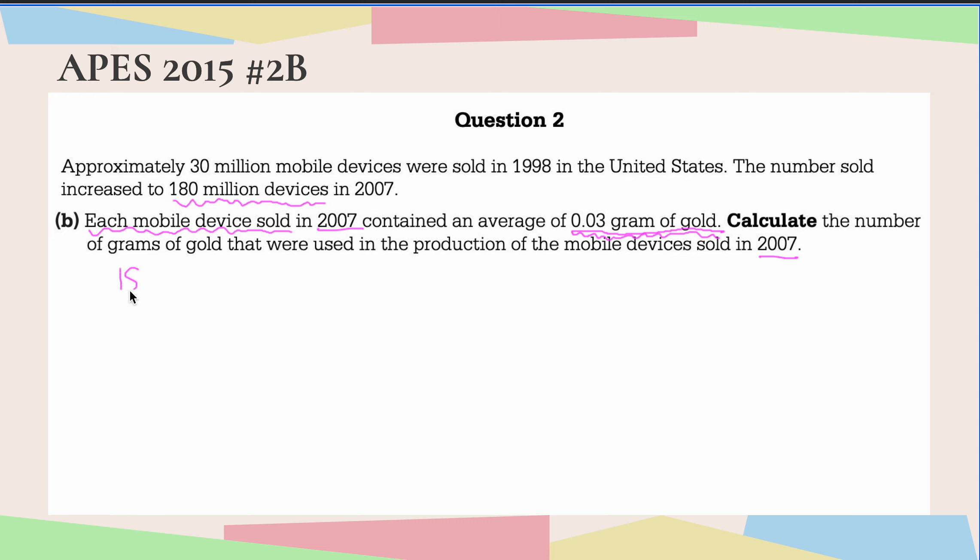So 180 million is the same as 180 times 10 to the sixth. But we have to convert this to proper scientific notation. I'm going to move my decimal place two to the left. So that's going to be 1.8 times 10 to the 8th devices sold.